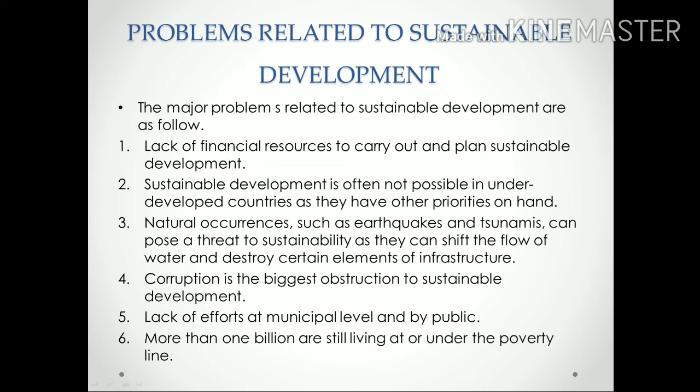Second, natural occurrences such as earthquakes and tsunamis affect sustainable development because they can shift the flow of water and destroy certain elements of infrastructure. Third, corruption is the biggest obstruction to sustainable development — governments allocate funds for development, but due to corruption, the money either does not reach the target or reaches in very small amounts, thereby slowing down sustainable development.